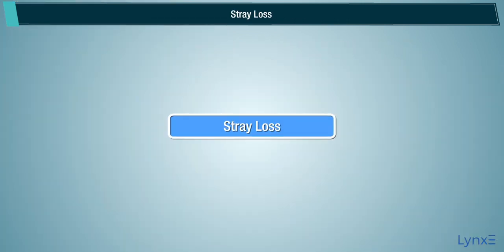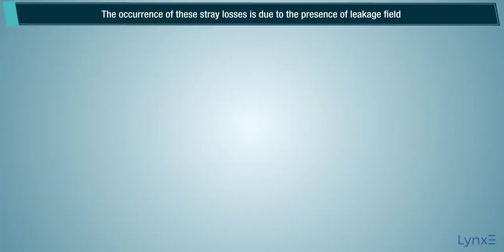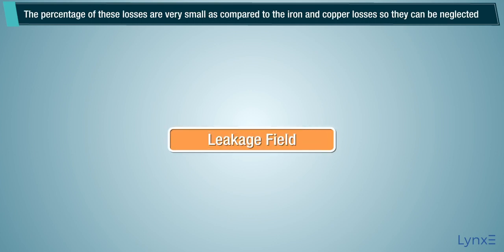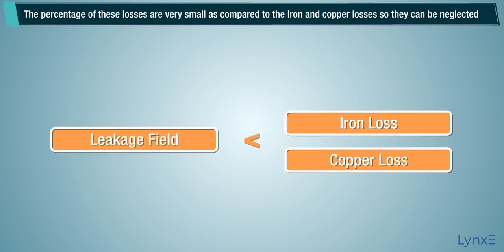Stray loss. The occurrence of these stray losses is due to the presence of leakage field. The percentage of these losses are very small as compared to the iron and copper losses, so they can be neglected.